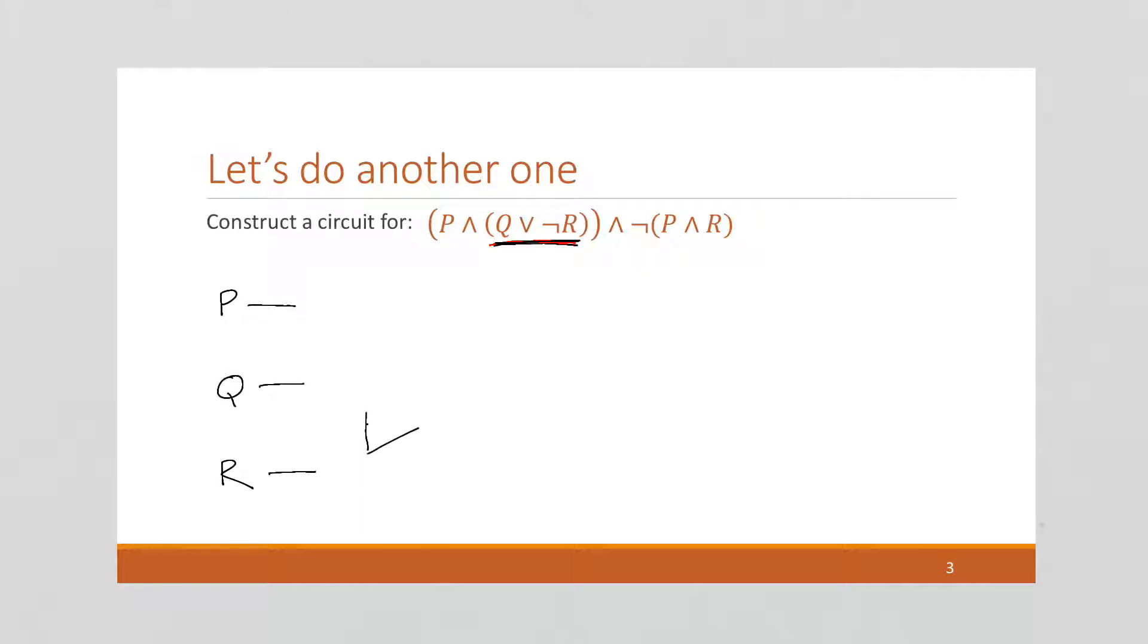So, I'm going to have a NOT R, and with an OR, ORed with Q. So, like that. Okay, we want to AND that whole thing now with P. So, we're going to have P come down, we're going to have that OR, here we have it.